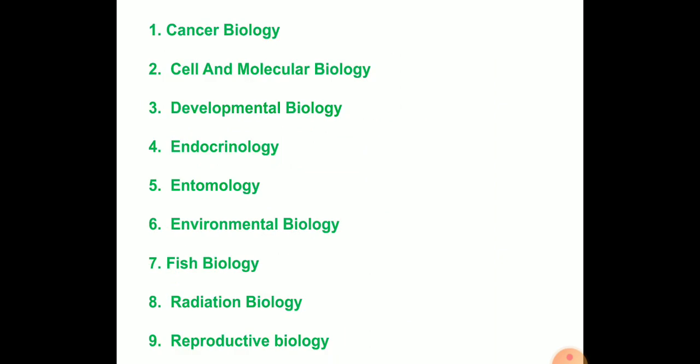In our university, nine types of special papers are offered. Each special paper has Paper First and Paper Second. The nine special papers are: (1) Cancer Biology, (2) Cell and Molecular Biology, (3) Developmental Biology, (4) Endocrinology, (5) Entomology, (6) Environmental Biology, (7) Fish Biology, (8) Radiation Biology, and (9) Reproductive Biology.